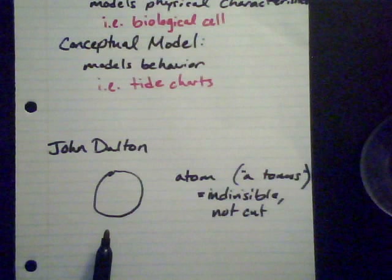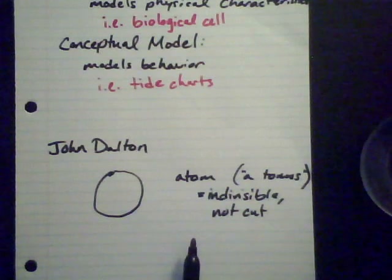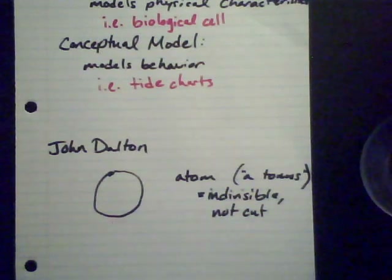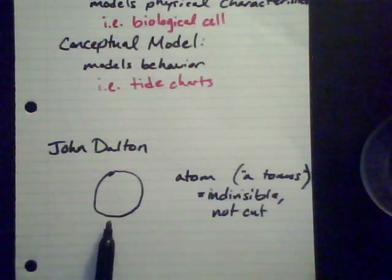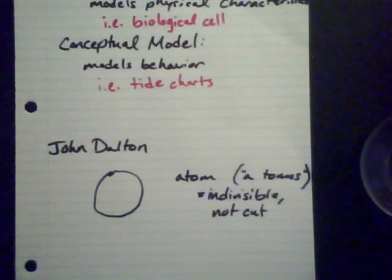Dalton's model was just a particle that cannot be further broken down. This particle would be different for different elements — so a particle of gold versus a particle of carbon would have a different smallest indivisible unit. The way they would be different is by having different masses — being made up of different amounts of matter. That was John Dalton's model.